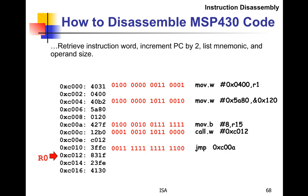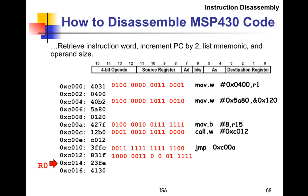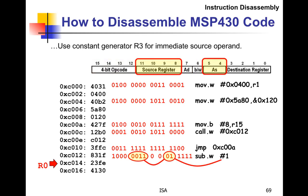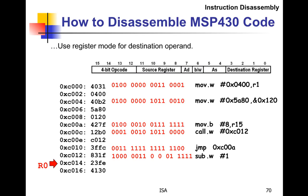We go down to the subroutine we were calling, grab the machine language, increment the PC, and parse it out. This time it's a 4-bit instruction — opcode 1000 — which turns out to be a subtraction instruction. It's a .W, and the addressing mode is immediate 1, one of those special constants. The destination register is R15. So the instruction is SUB.W #1, R15.